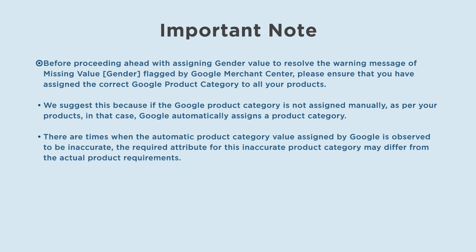Before proceeding with assigning gender value to resolve the missing value gender warning flagged by Google Merchant Center, please ensure that you have assigned the correct Google product category to all your products. We suggest this because if the Google product category is not assigned manually, Google automatically assigns one. There are times when the automatic category assigned by Google is inaccurate, and the required attributes for that inaccurate category may differ from the actual product requirements.